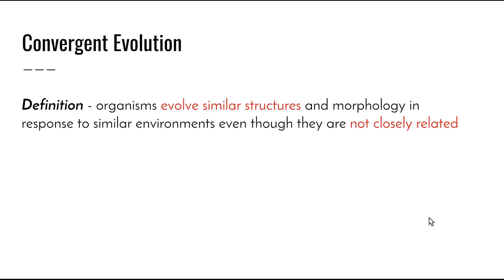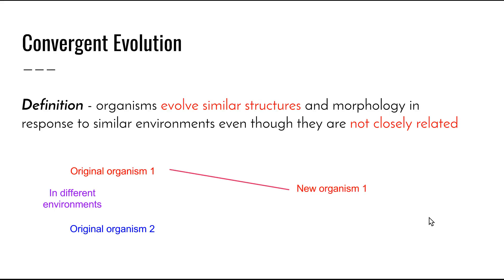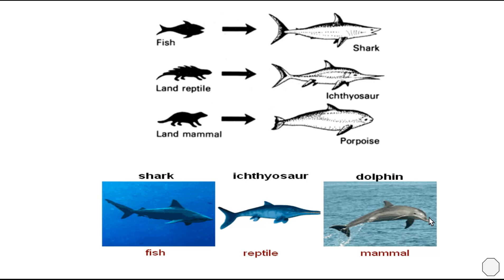Convergent evolution, on the other hand, is where organisms evolve similar structures and morphology — the way their body is put together — in response to similar environments, even though they are not closely related. Different species become similar even though they have had different evolutionary pathways. We start with two organisms living in different environments, but over time those environments become very similar, resulting in two new organisms that look almost the same as each other because they are living in the same or very similar environments.